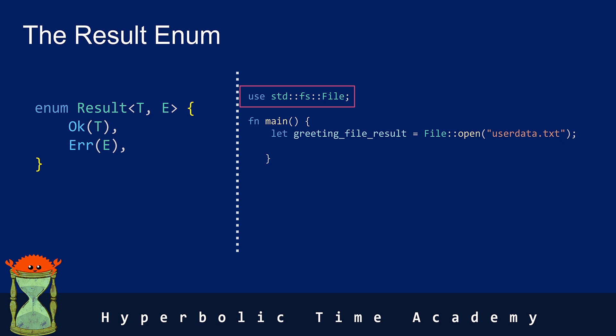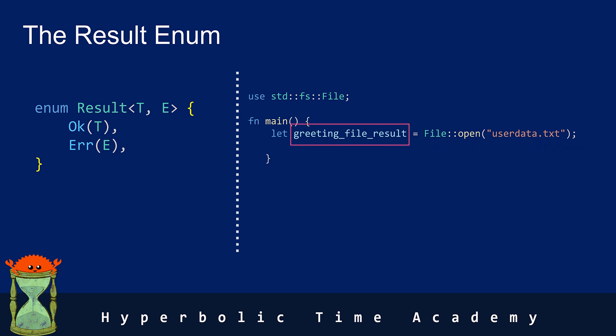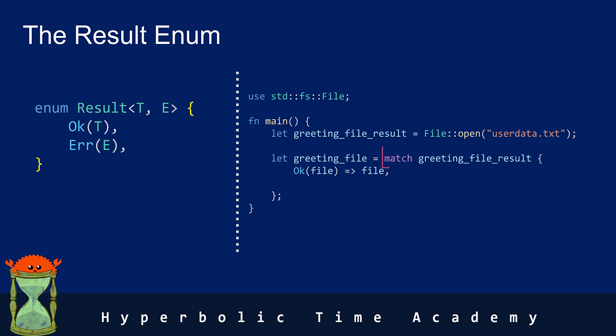Reading files is one of them. In the main function, we are attempting to open a file named userdata.txt. The File::open function is called with a file name as its argument. This function returns a result enum type. We store this result in a variable called greeting_file_result. We want to handle this result enum — if the operation was successful, we want to proceed with the file that was opened. If there was an error, we want to stop the program and print the error message. To do this, we use a match expression.